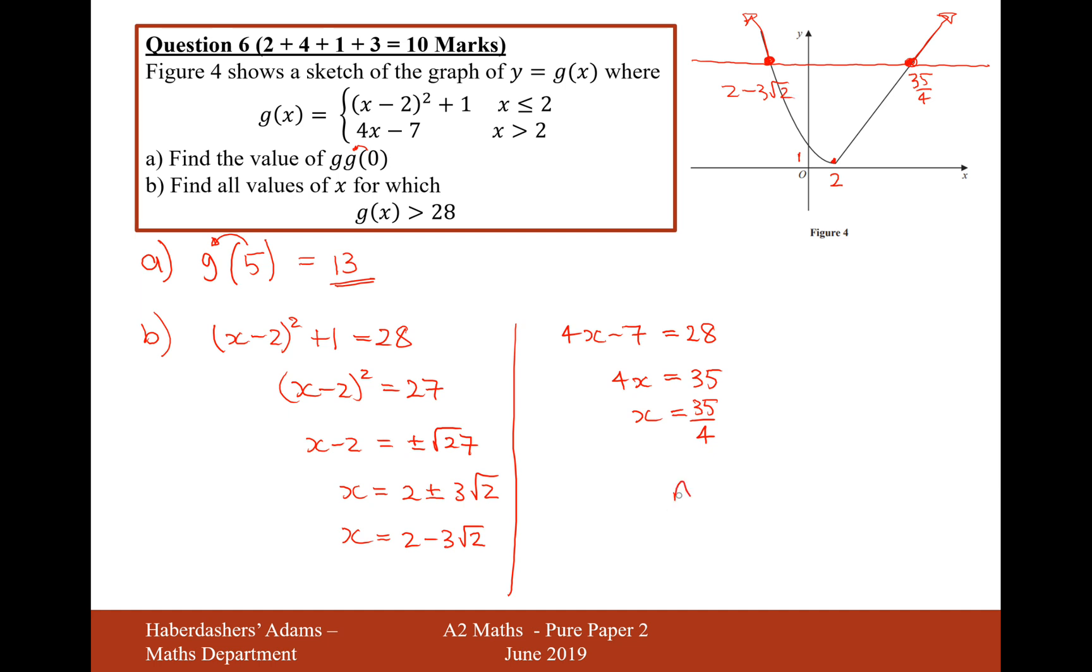This point here is 35 divided by 4, and this point here is 2 minus 3 root 3. So the answer for when g of x is greater than 28 is when x is less than 2 minus 3 root 3, and x is bigger than 35 over 4. That's the answer for part b.